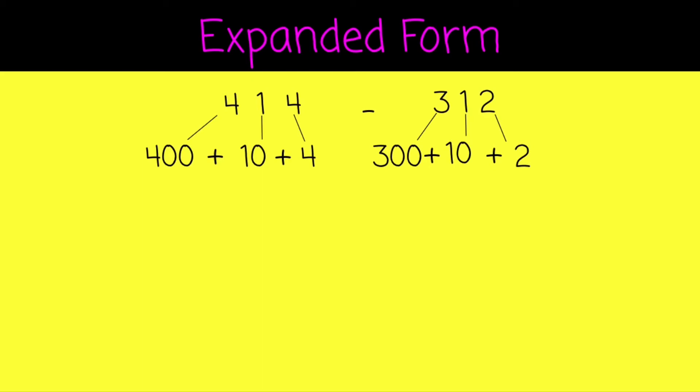Okay, now let's subtract our hundreds. 400 take away 300. Then our tens column, 10 take away 10. And our ones, 4 take away 2.